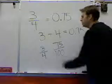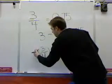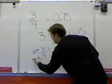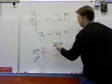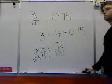The way that we can figure that out is if we multiply the top and the bottom by 25, 25 times 3 is 75 and 25 times 4 is 100.